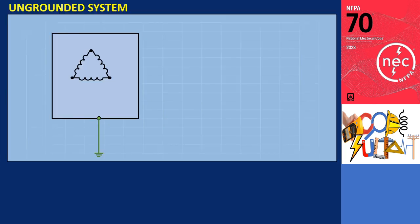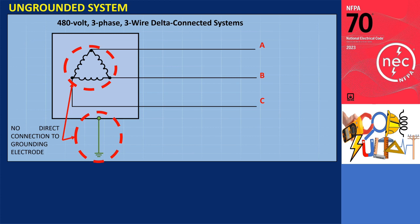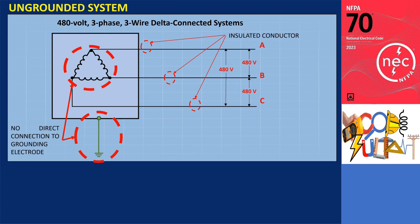Electrical systems that are not grounded have no direct connection to a grounding electrode. Let's consider a 480V, three-phase, three-wire delta-connected system as shown in the illustration. In this system, each pair of points within the delta configuration generates a voltage of 480V. Ungrounded systems with insulated conductors installed in metallic enclosures are grounded to different extents due to the presence of distributed leakage capacitance within the system.